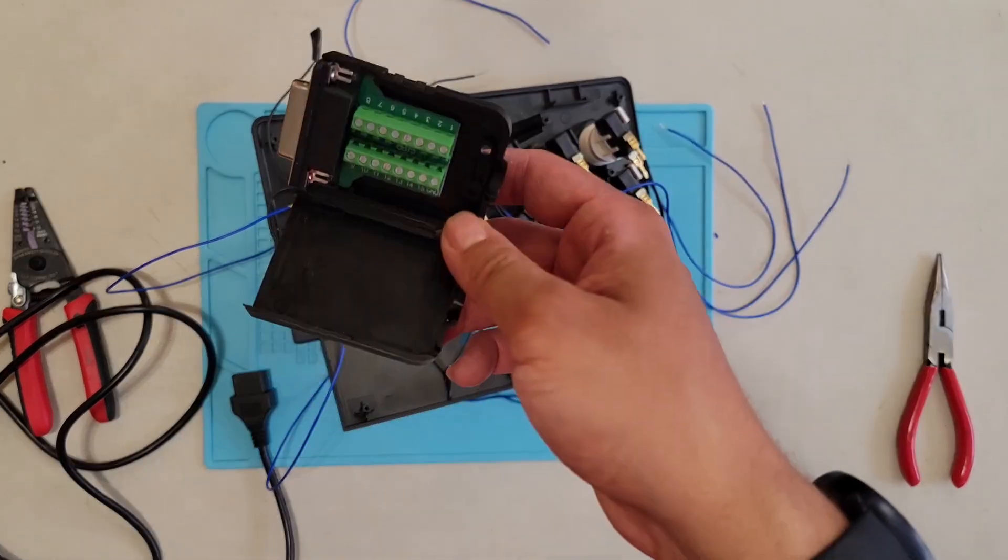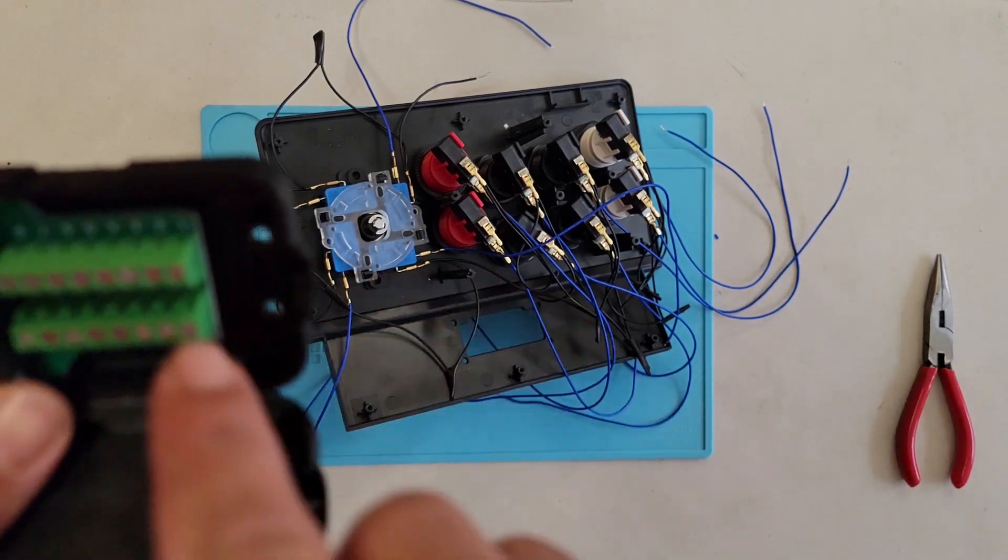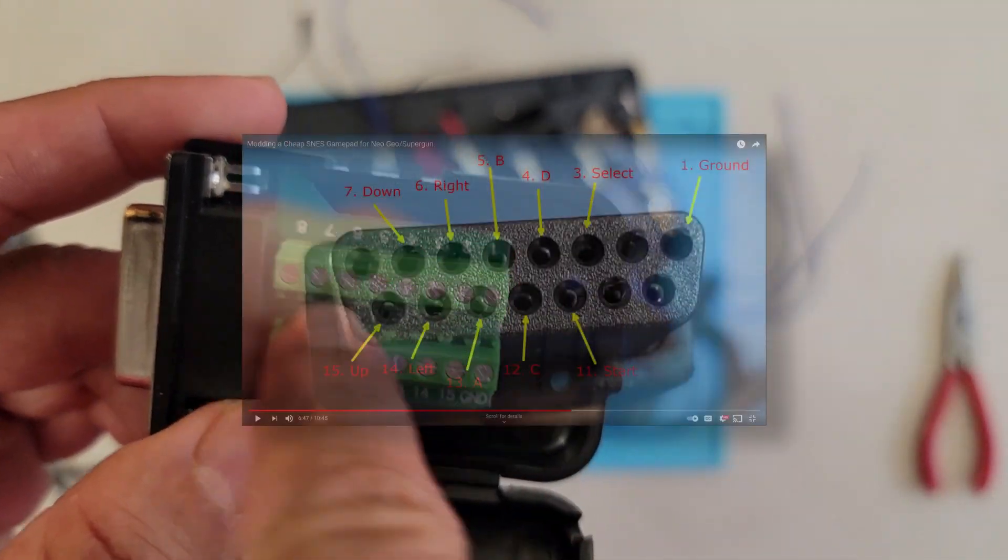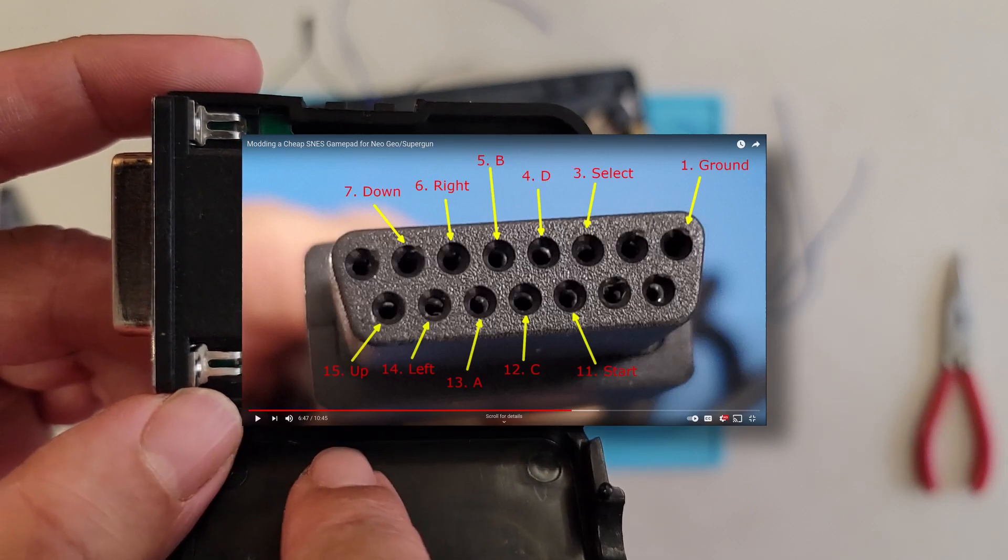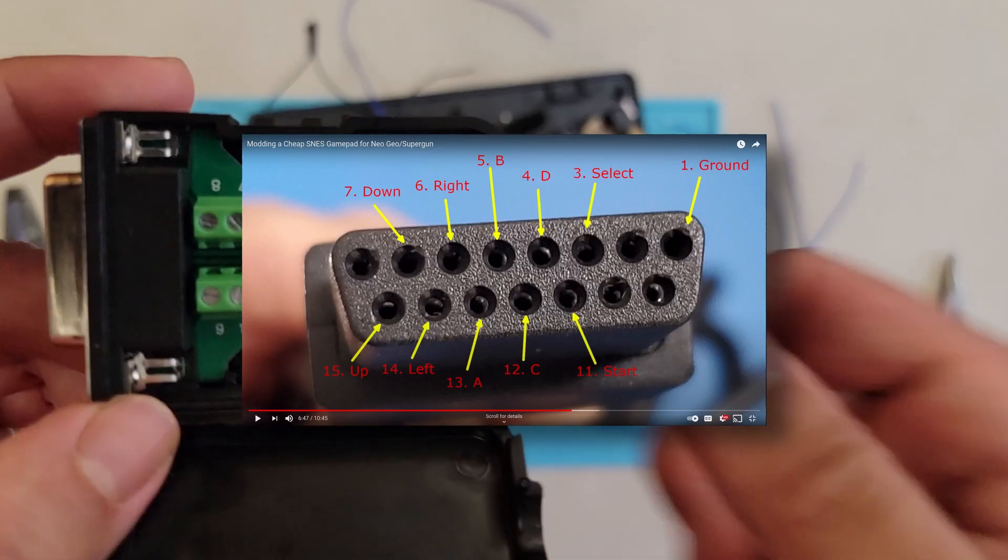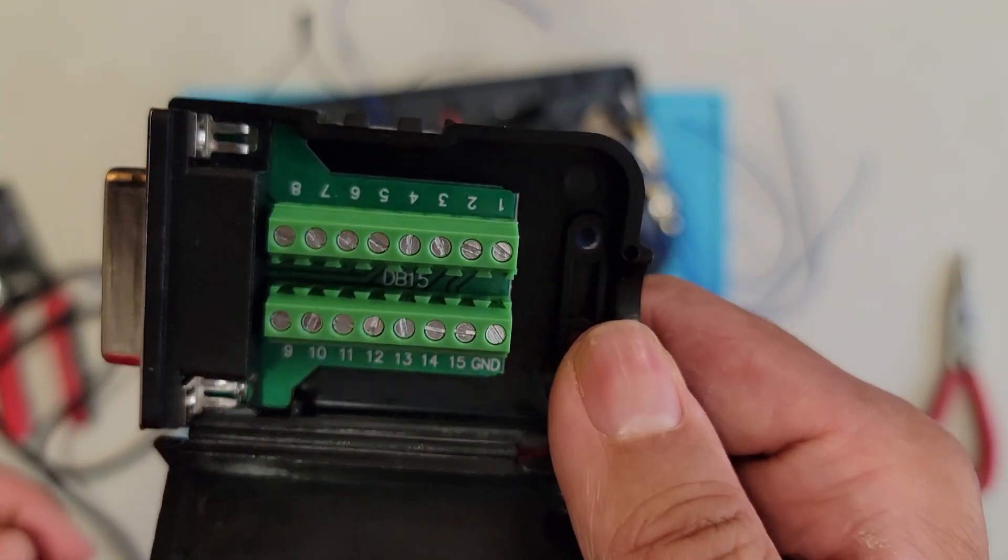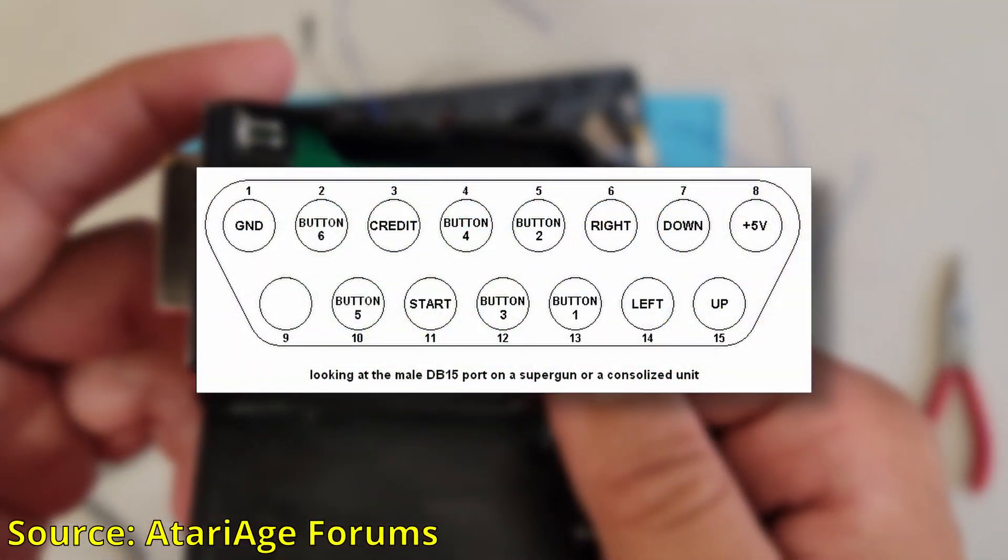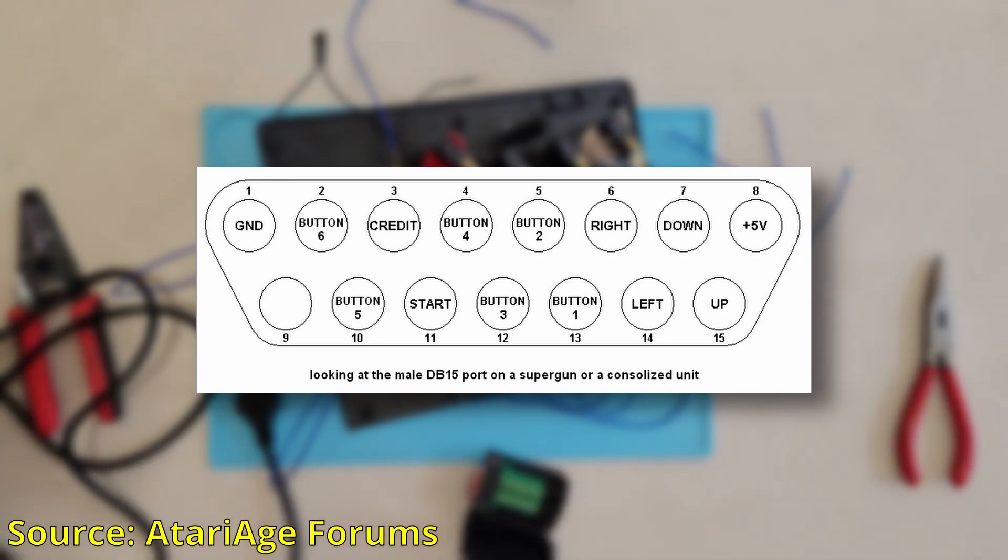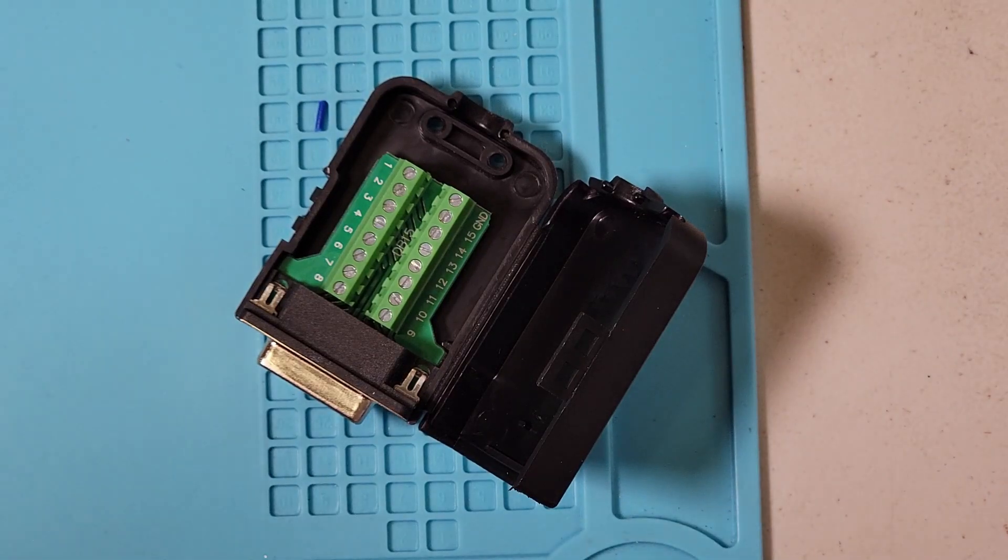Before I start attaching cables to the DB15 adapter, I'm going to need to know what port on the adapter represents what button action. I first referenced a pinout I created for a Super NES controller I modded to work on a Neo Geo, but this only uses four action buttons, which is all the Neo Geo needs. But I also want to wire the rest of the buttons on the arcade stick. Then I found this other image on the Atari Age forums which had everything I needed to know about the pinout. So I'll match each of the numbers and button action on the image to the numbers on the DB15 adapter.